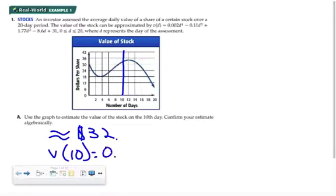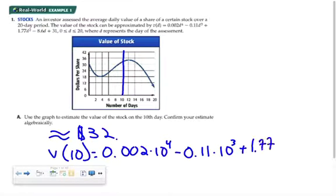And that means plugging into your calculator all of this loveliness, 0.002 times 10 to the fourth power minus 0.11 times 10 to the third power plus 1.77 times 10 squared minus 8.6 times 10 plus 31. So all of that is what you're typing into your calculator.